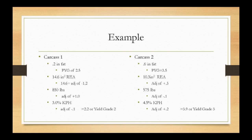Moving on to carcass 2: 0.6 inches of fat gives a PYG of 3.5. The 10.3-inch ribeye is less than 11, so we add — an adjustment of plus 0.3 because less muscle is bad. At 575 pounds, that's a lighter carcass, giving an adjustment of minus 0.1 — our base is 600, and it's lighter, so we subtract. For 4.5% KPH, more fat is bad, so we adjust up. That gives a final yield grade of 3.9, or yield grade 3.